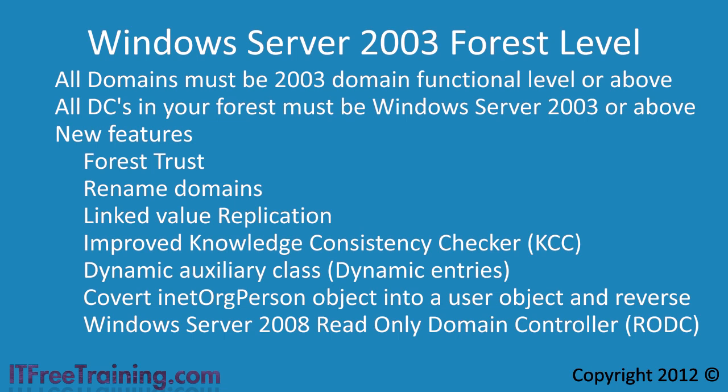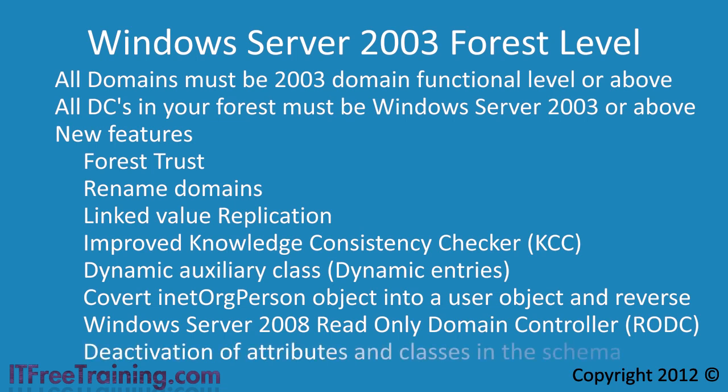The last feature of the Windows Server 2003 forest level is the ability to deactivate and redefine attributes and classes in the schema. Previously when you created a new attribute or class in the schema you were stuck with it. There is still no delete key for the Active Directory schema, but if you make a mistake you can deactivate it. You can also redefine objects, which allows you in some cases to turn a mistake into something more useful, though you should still be careful when making changes to the schema.